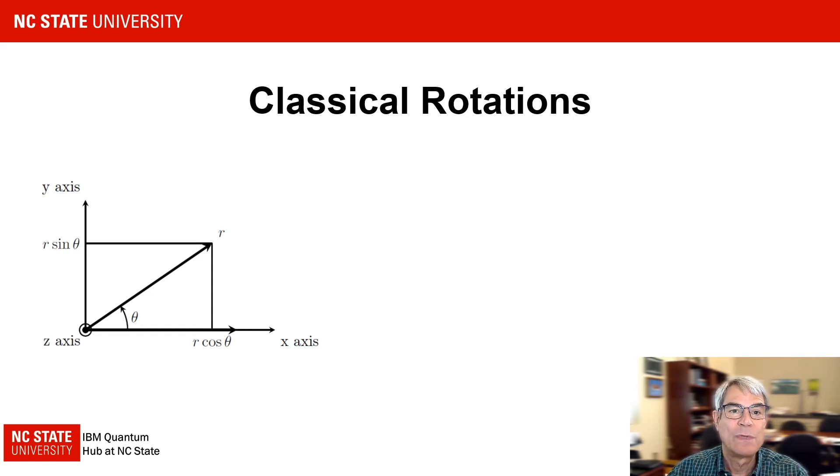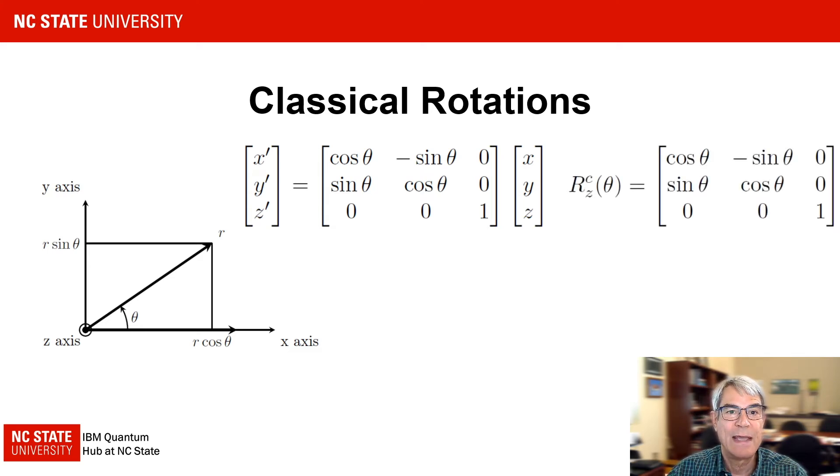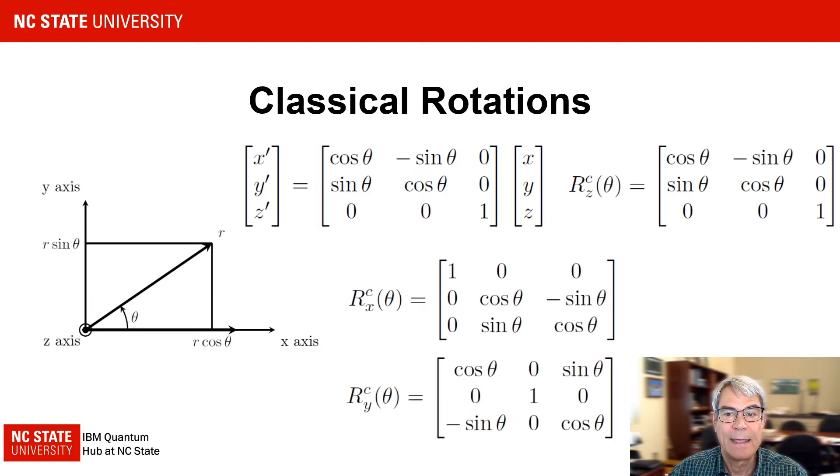In general, we can write the possible rotations in matrix form. We refer to the square matrix as the rotation matrix for rotations about the z axis. Here the superscript c indicates a classical physics rotation. Following similar procedures, rotations about the x and y axis are described by matrices shown here and here.